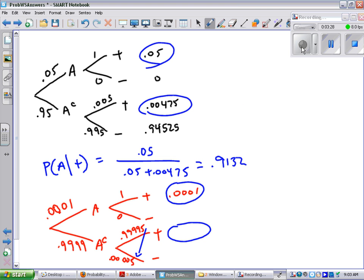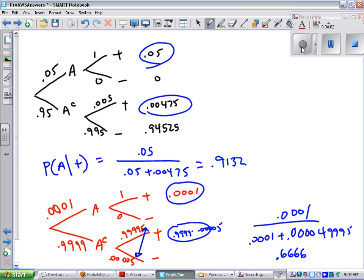Sorry, these two numbers are switched. Those two numbers are switched. So it's those two blue numbers. So this blue number here is 0.9999 times 0.0005, and that's what goes on the bottom. Okay, and on the top, I've got that, which works out to be something like 0.66669.